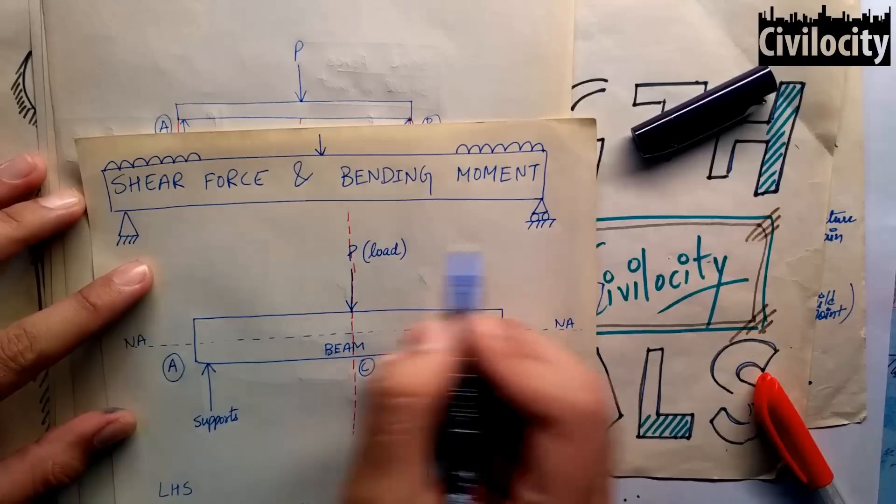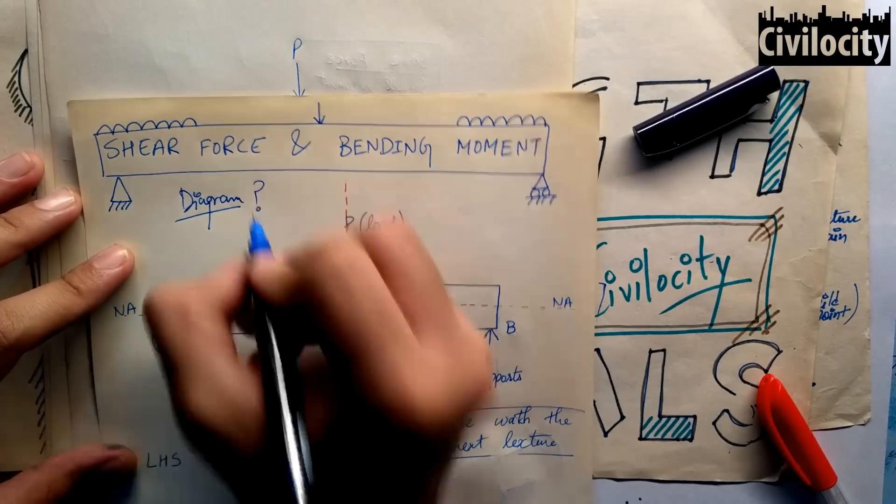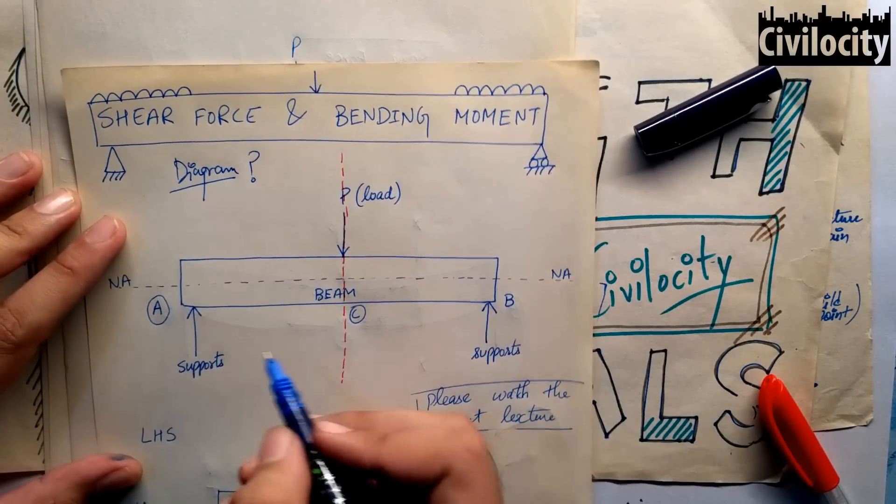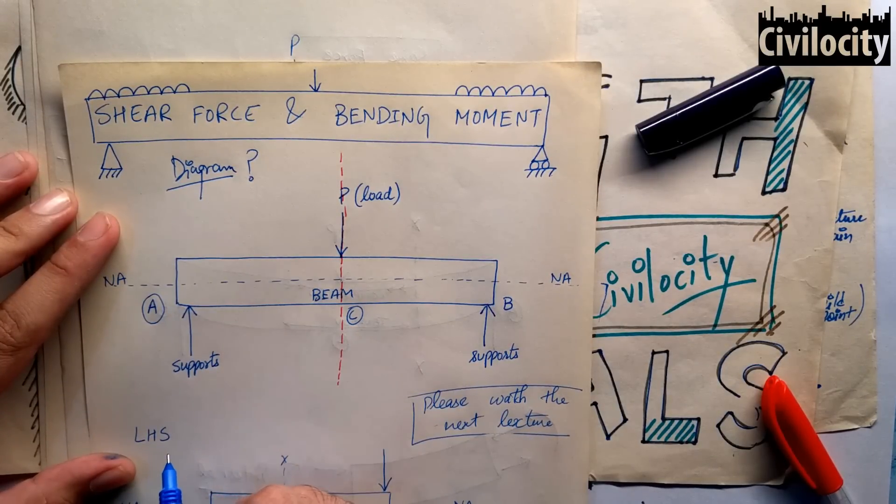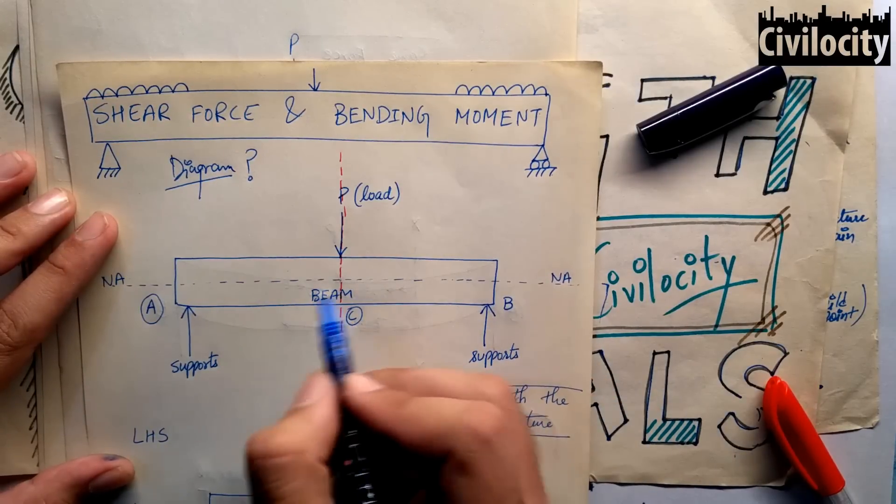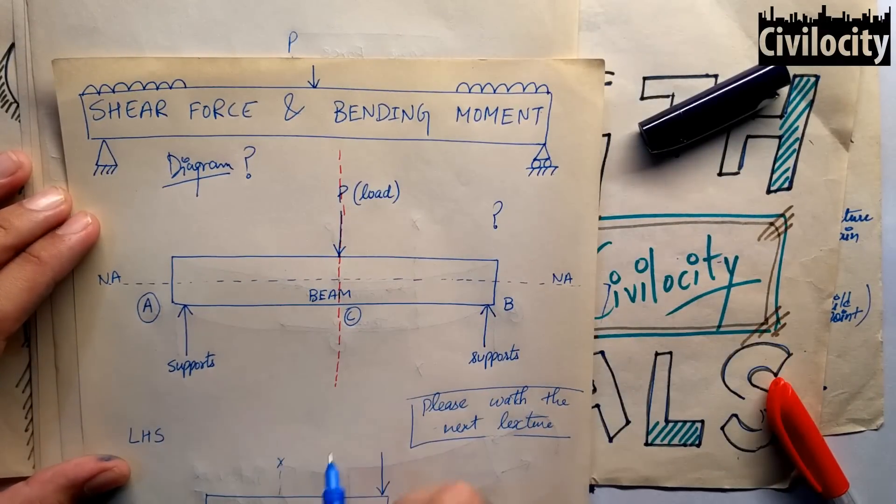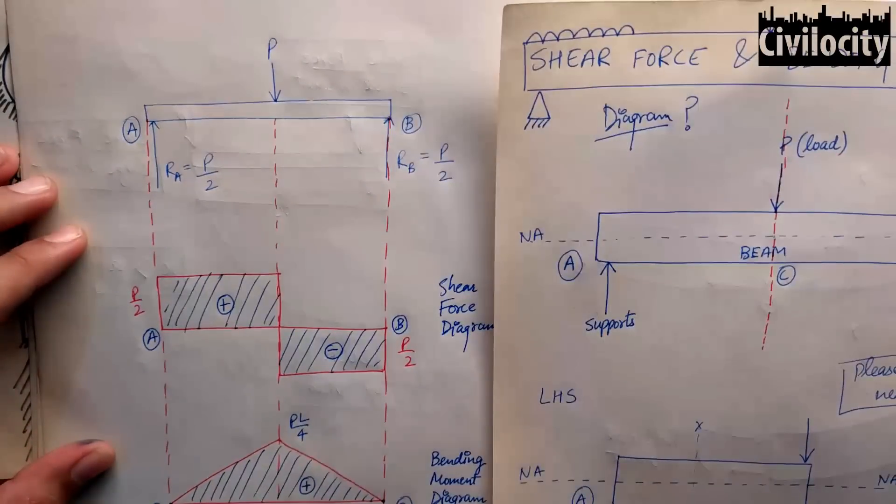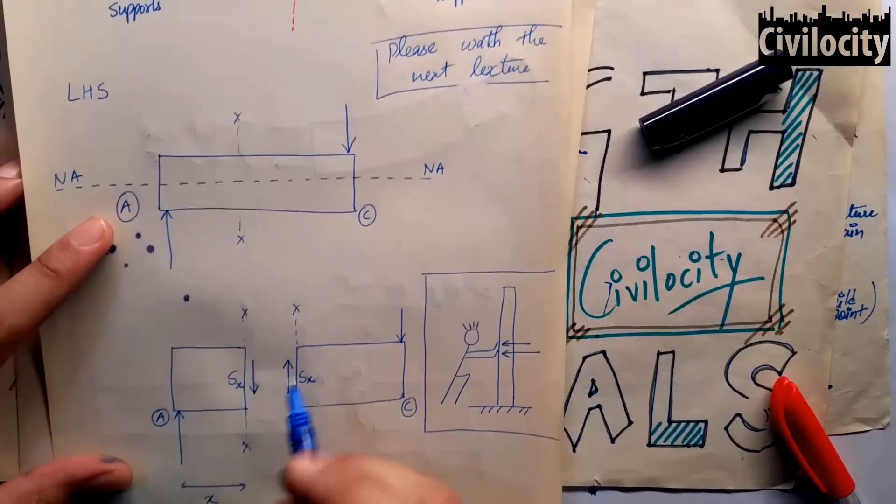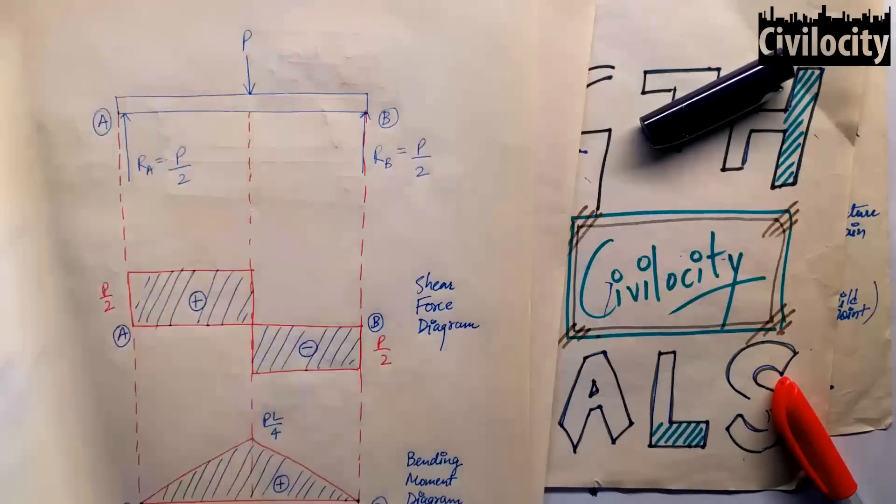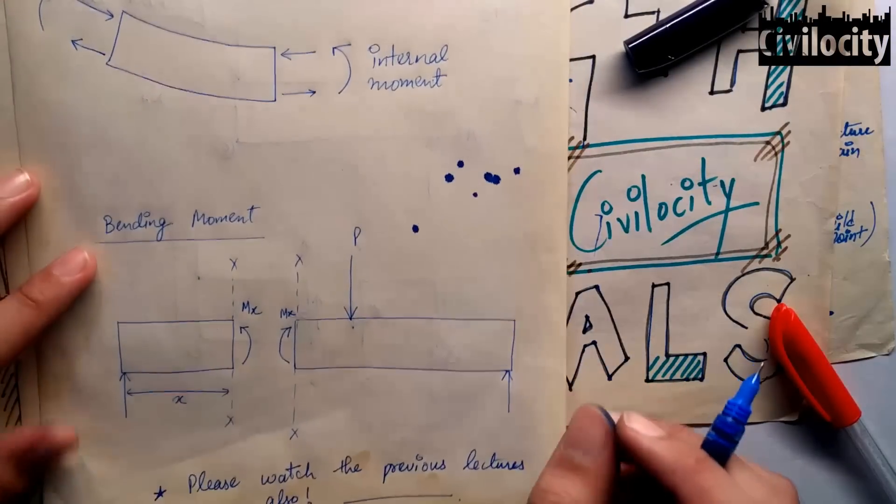To shear force ka basically ek hi funda hota hai ki hume beam ki length mein hume wo points dhoondhne hain jahan pe maximum shear aur maximum bending moment produce ho raha hai. Agar hume us beam ke weaker sections ka pata hi nahi hoga, to hume us beam ko kaise aur acha banayenge, ya kaise us beam ko kisi building ke andar use karenge. To ek beam ke weaker sections ko jaanne ke liye, hume shear force diagram aur bending moment diagrams draw karna bahut zaroori hota hai. To agar ab iske baad, koi aap se poochhe ke shear force or bending moment kya hota hai, to shear force wo force hota hai jo beam ko shear se fail karne ki koshish karti hai, aur bending moment wo force hota hai jo beam ko bend karne ki koshish karti hai. To shear force or bending moment diagram ke baare mein hum next lecture mein baat karenge.